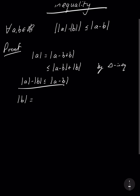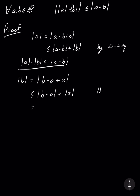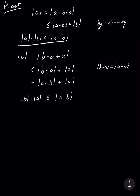Secondly, we have |b| = |(b - a) + a|. Again by the normal triangle inequality, this is less than or equal to |b - a| + |a|. Since |b - a| is the same as |a - b|, if we rearrange we get |b| - |a| is less than or equal to |a - b|, which is the same as saying -(|a| - |b|) is less than or equal to |a - b|.